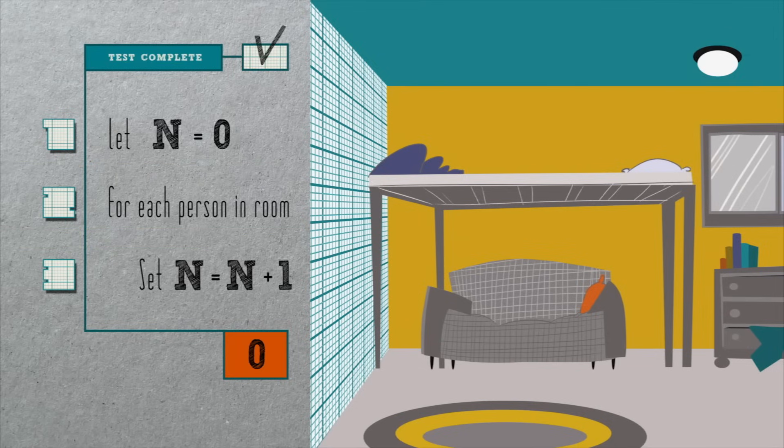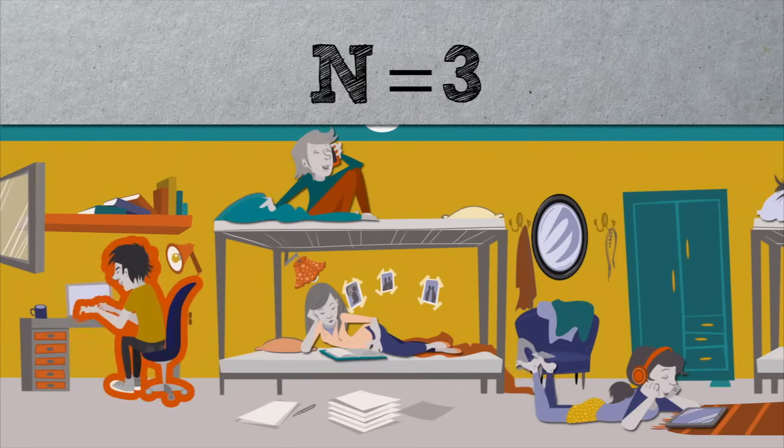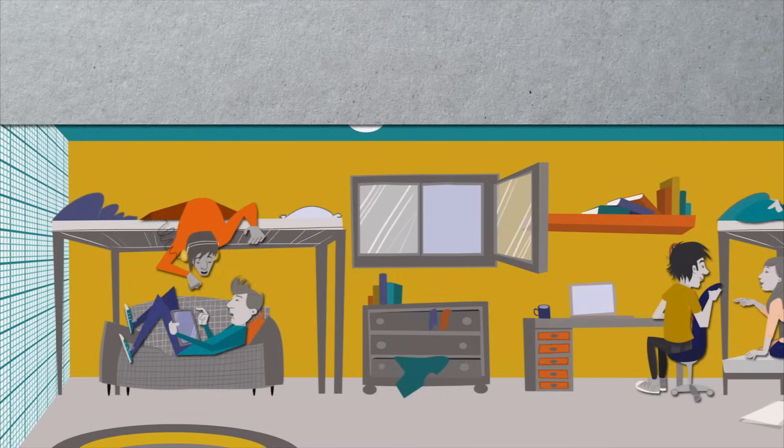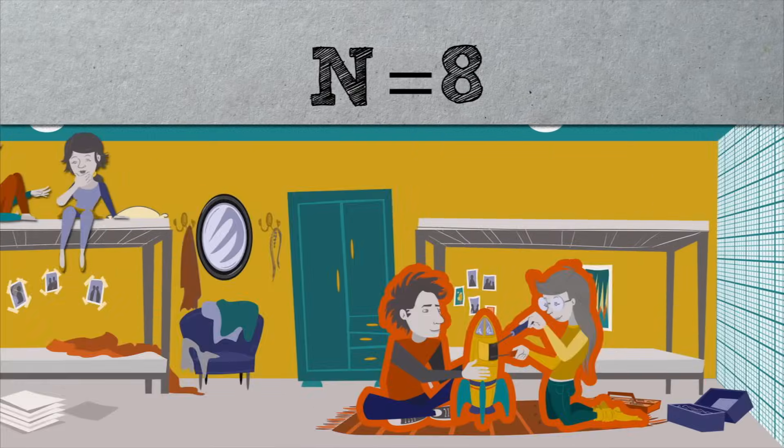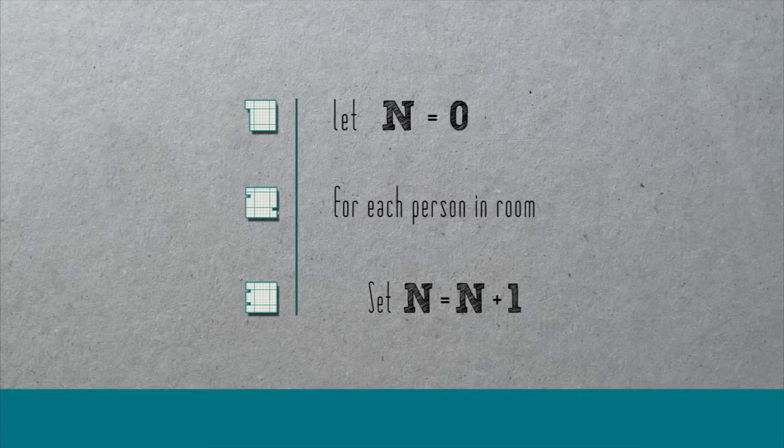But counting people one at a time is pretty inefficient, too, no? Surely we can do better. Why not count two people at a time? Instead of counting one, two, three, four, five, six, seven, eight, and so forth, why not count two, four, six, eight, and so on? It even sounds faster, and it surely is. Let's express this optimization in pseudocode.